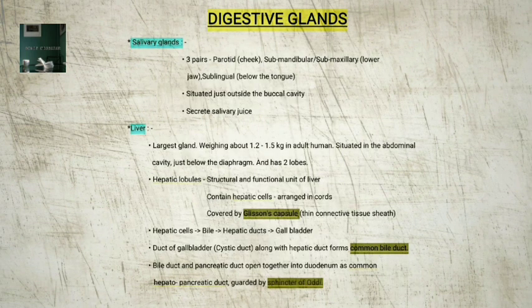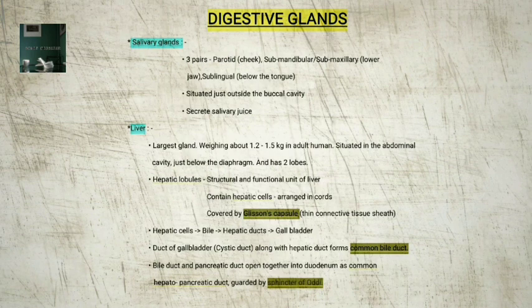The digestive glands associated with the alimentary canal include: 1. Salivary glands — saliva is mainly produced by three pairs of salivary glands: the parotids, the submaxillary or submandibular, and the sublinguals. These glands, situated just outside the buccal cavity, secrete salivary juice into the buccal cavity.